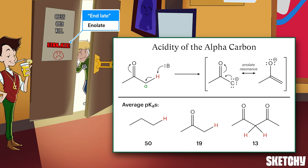You deprotonate a carbon and end up with an oxygen anion? Well, that's the magic of resonance. The most important resonance structure of an enolate puts the negative formal charge on oxygen instead of carbon, which you can remember with this O-shaped frowny face.